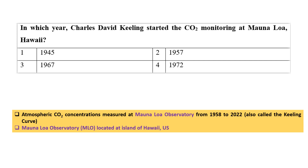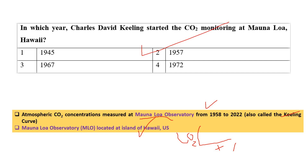Question thirteen: In which year did Charles David Keeling start CO2 monitoring at Mauna Loa, Hawaii? CO2 concentration measurement was carried out at the Mauna Loa Observatory situated on the island of Hawaii, USA, from 1957–58 to the present. The graph plotted between CO2 concentration and time period is known as the Keeling curve. So the right answer is 1957.